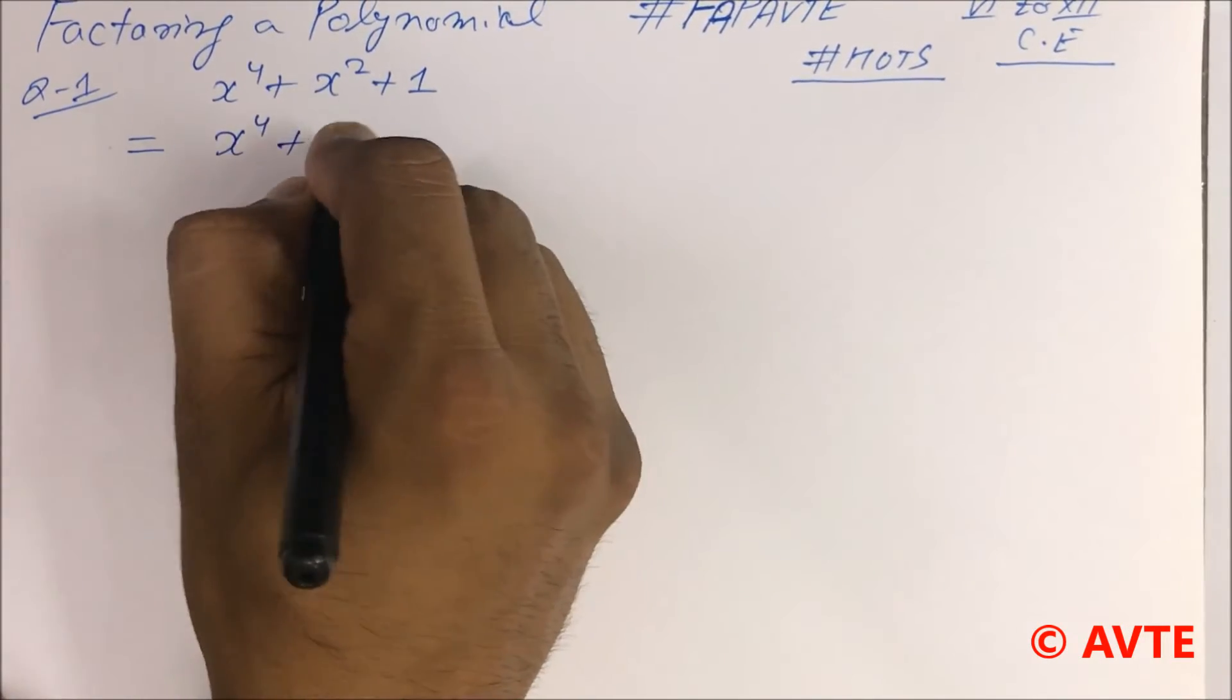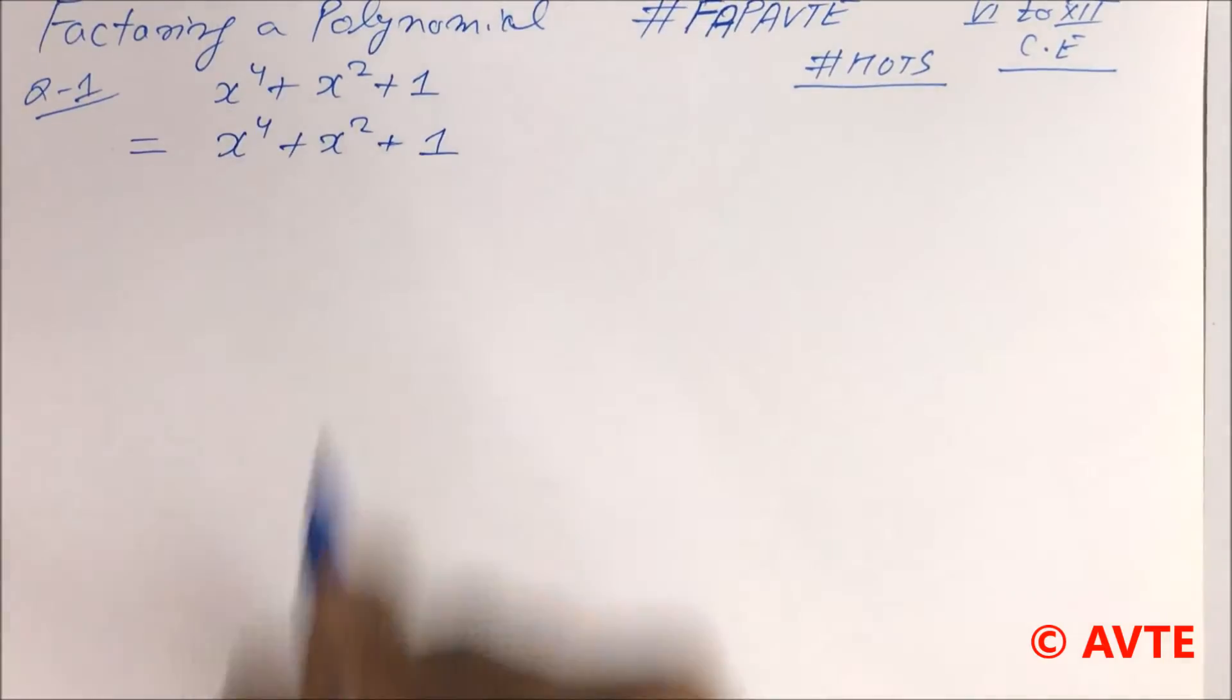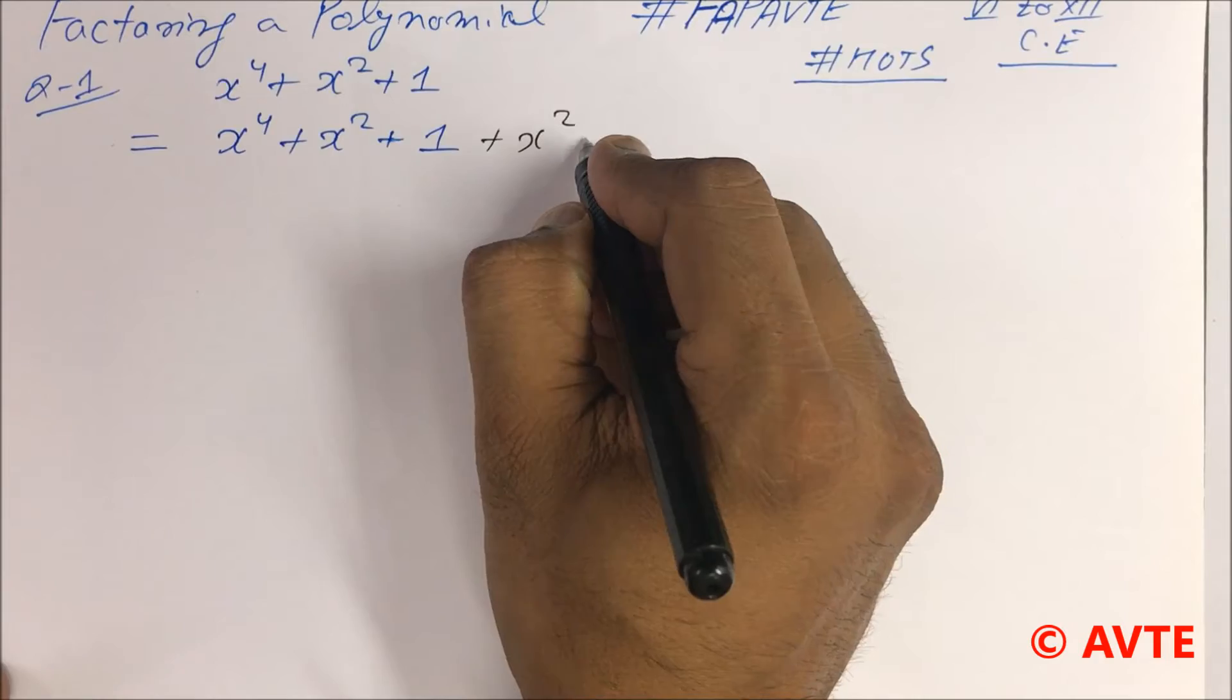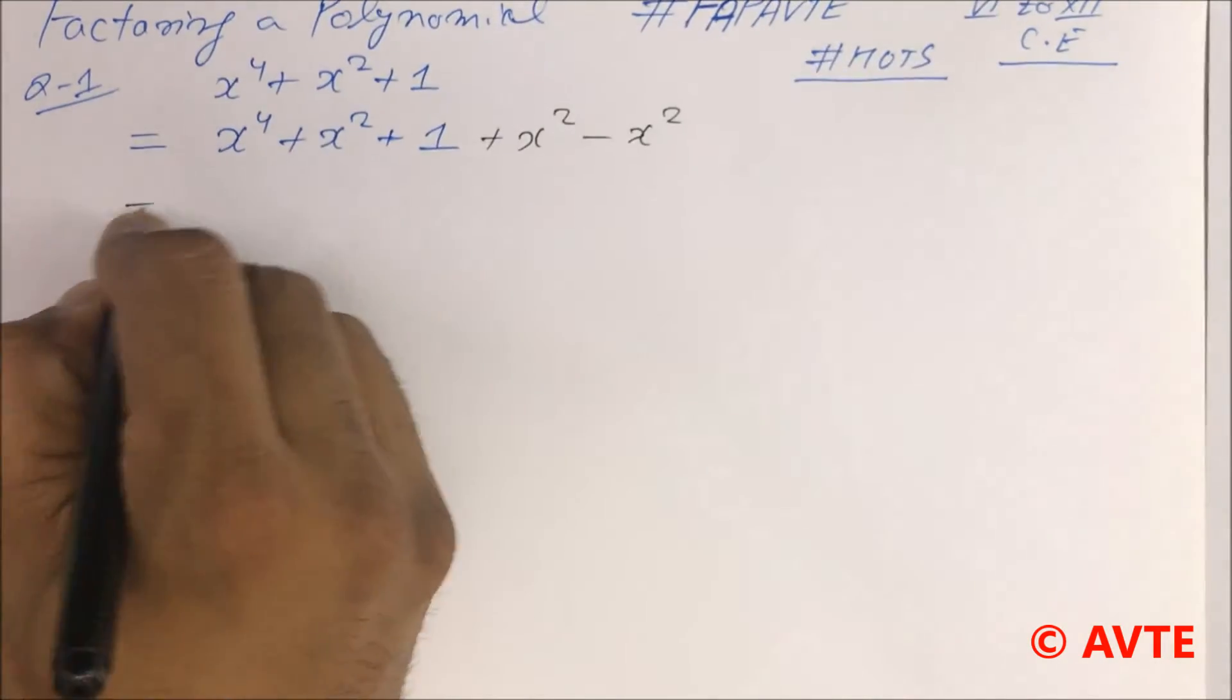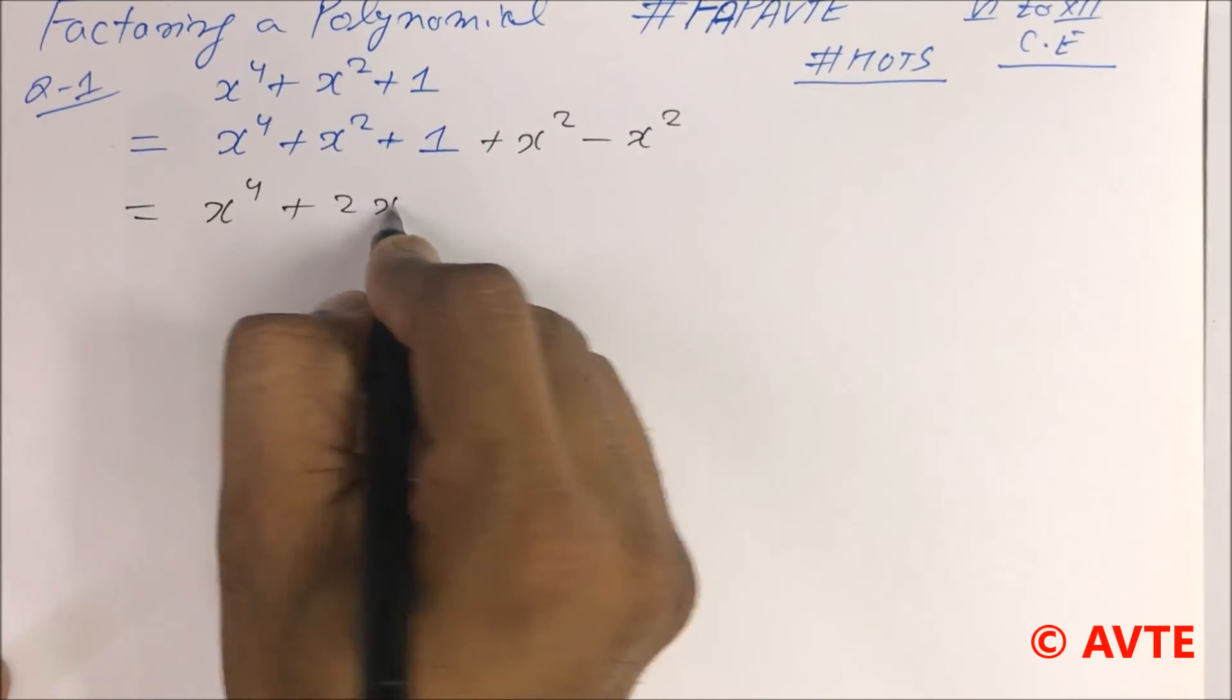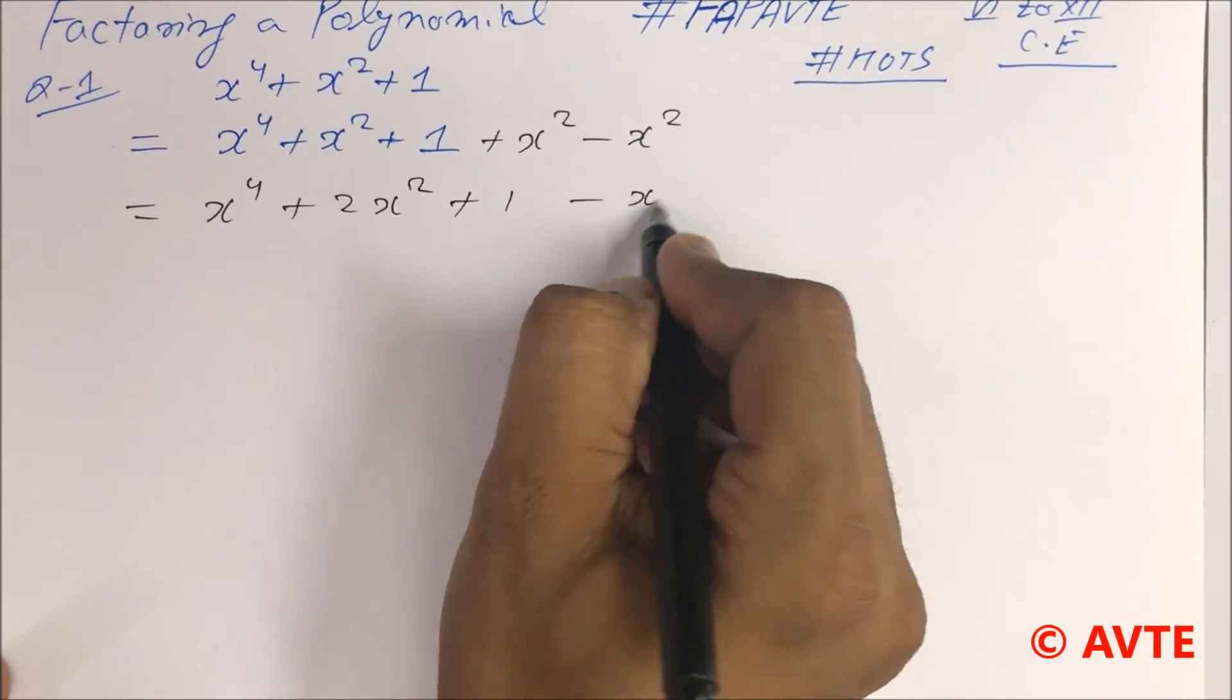This is x raised to the power of 4 plus x square plus 1. So what I do here I just add x square and subtract x square. So it becomes x to the power of 4 plus 2 x square plus 1 minus x square.